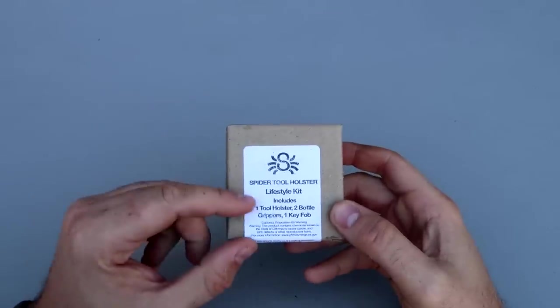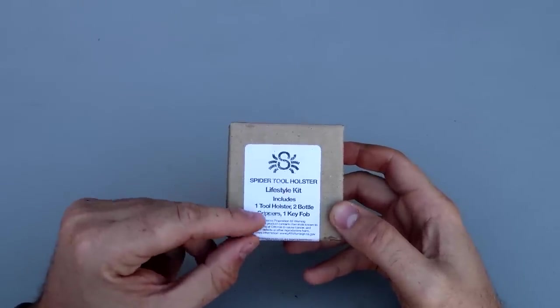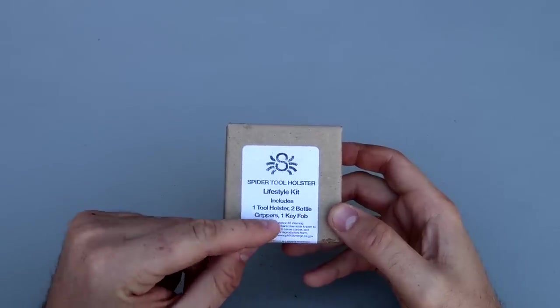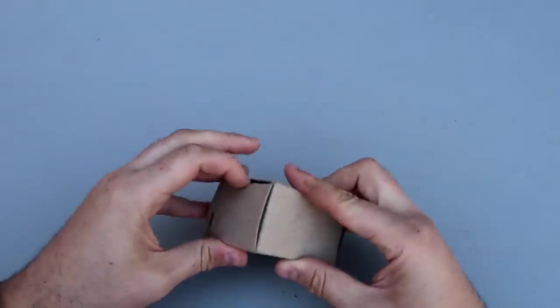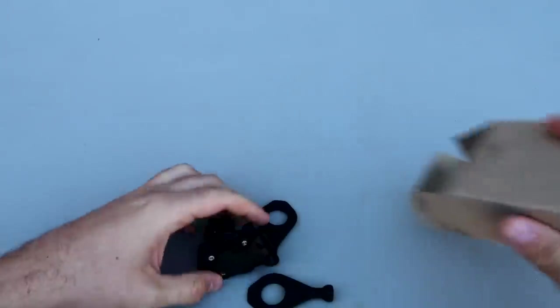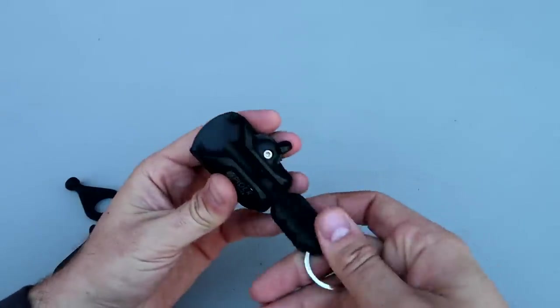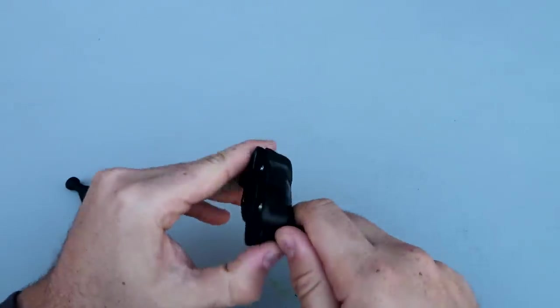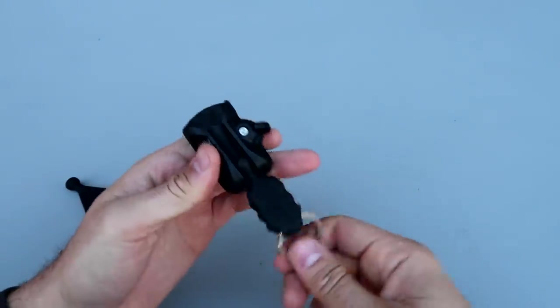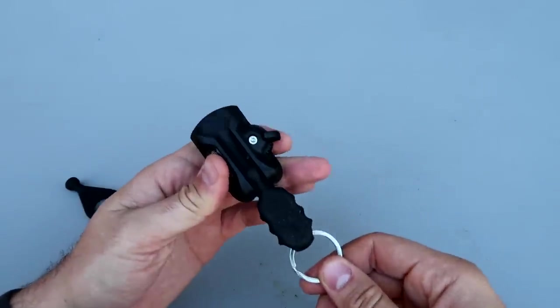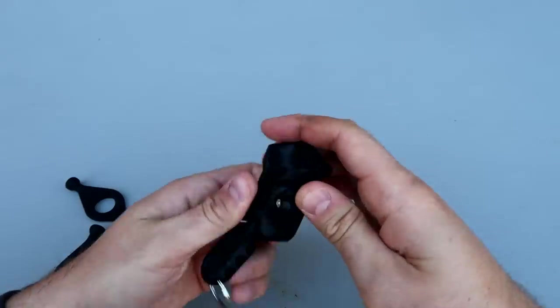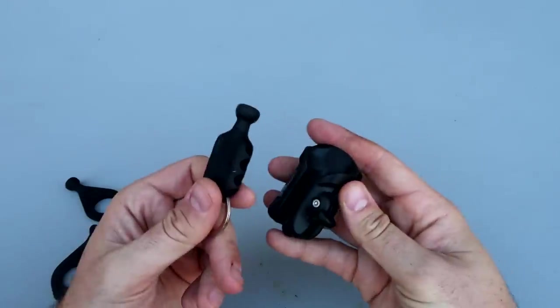Got in here a Spider tool holster: one tool holster, two bottle grips, and one key fob. This side here is a key fob. Look how cool that is - you put this on your belt, you put your key over here or any kind of tool, then you press it on that, and then you take out the tool.